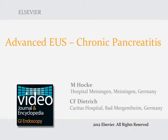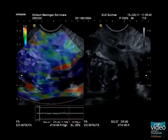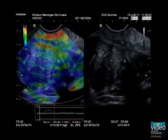The following video sequences show five modern endosonographic techniques in a patient with focal chronic pancreatitis of the pancreatic head. You will first see the elastography mode, then contrast-enhanced high mechanical index color Doppler ultrasound with 3D reconstructions, and then contrast-enhanced low mechanical index endosonography with 3D reconstructions. The first video shows an echo-poor mass in the pancreatic head.